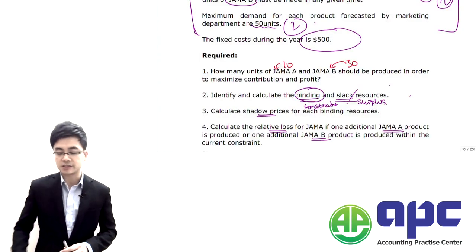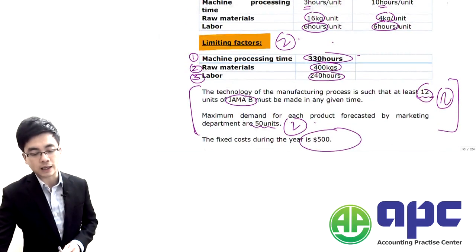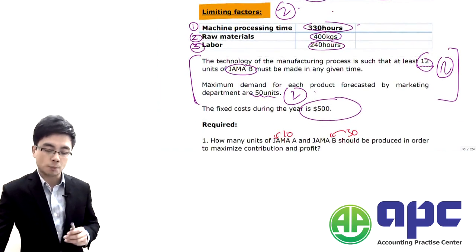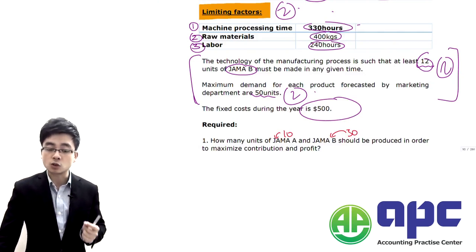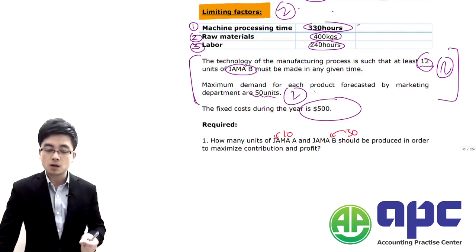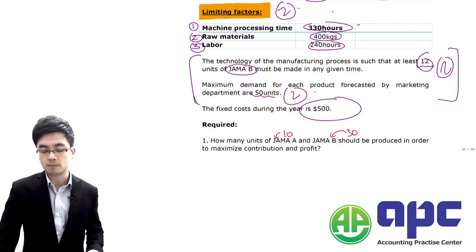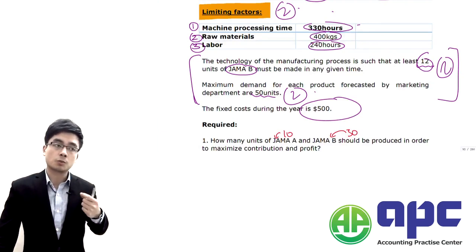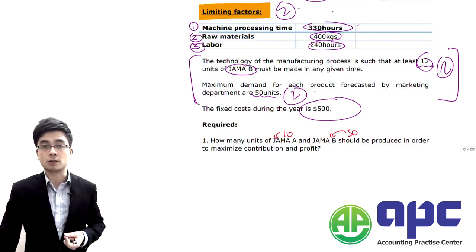If we slot those values back into the limiting factor equations, we are going to see for the combination of these two products whether or not we can use up the machine processing time, raw materials, as well as labour — and whether there will be a surplus or it would be a binding resource.